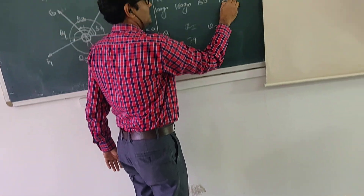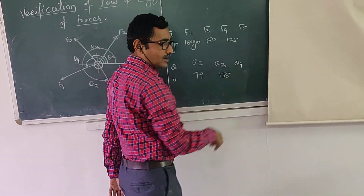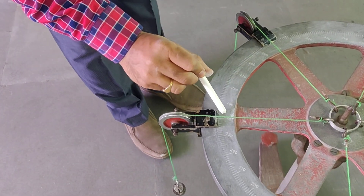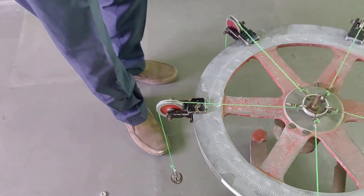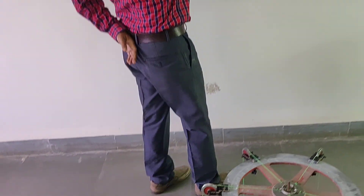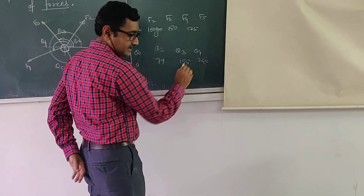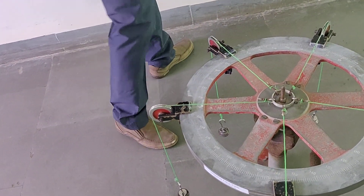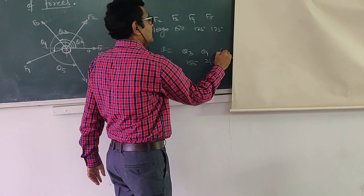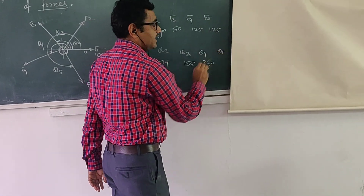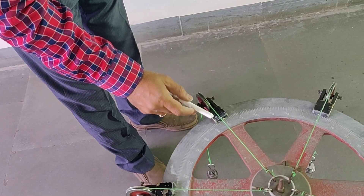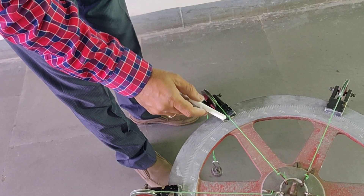Now the F4 force is 100 plus 25 grams, giving 125 grams. F4 is 125 grams, and theta 4 is approximately 240 degree. The fifth force F5 is again 125 grams, and theta 5 — its angle — is 296 degree.